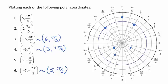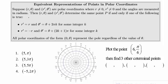After plotting several points, we have observed that in polar coordinates, a point can have multiple representations. Suppose that r theta and r prime theta prime are polar coordinates where r is not equal to 0 and the angles are measured in radians.